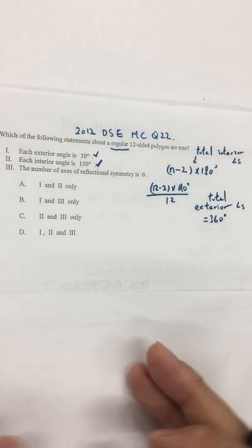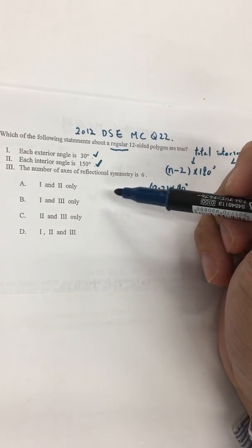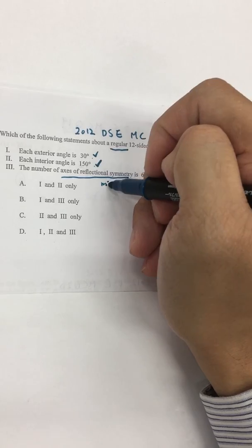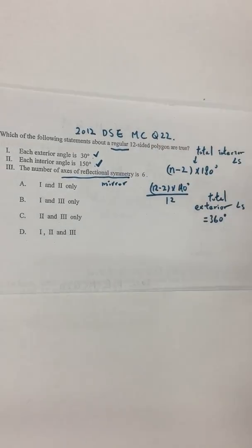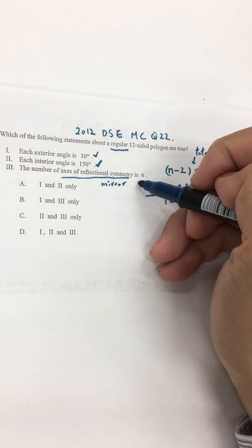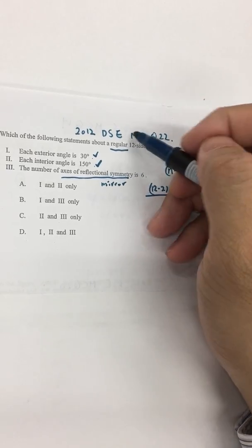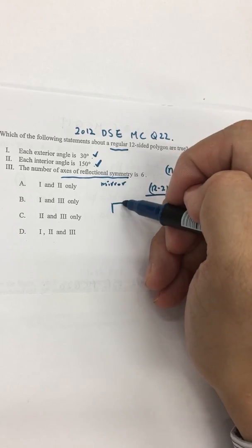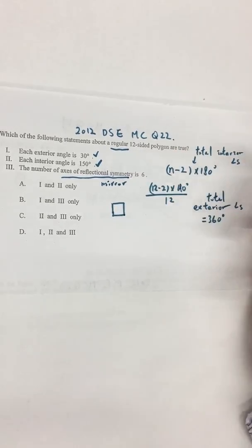The third one is called axes of symmetry. So axes of reflection symmetry actually is the mirror that you can put inside the figure that you can see left-hand side and right-hand side the same. So if they're asking you is this 12-sided polygon, the number of mirrors is 6. So use a simple one to take a look, which is square, regular square.